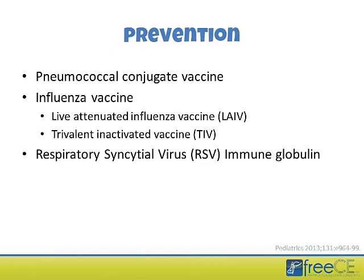The influenza vaccine is also important for AOM prevention. Since most AOM cases follow an upper respiratory tract infection — including influenza — it has been estimated that as many as two-thirds of children with influenza develop AOM. Studies have demonstrated 30 to 55% efficacy of the influenza vaccine in preventing AOM during flu season. Influenza vaccine is recommended for all children six months of age and older.